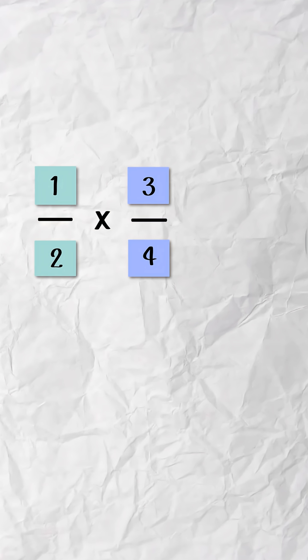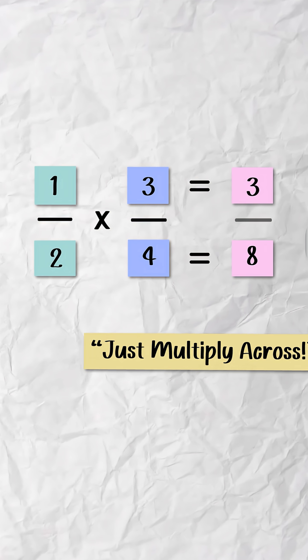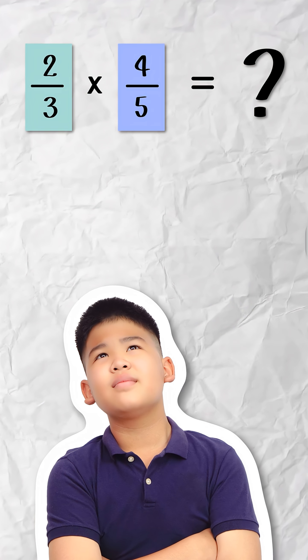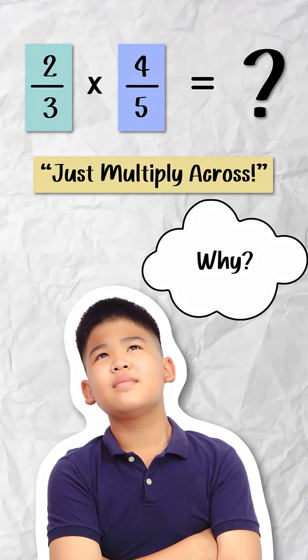Did you notice that one times three equals three, and two times four equals eight? The rule for multiplying fractions is a shortcut for this whole process. It isn't random or arbitrary. When students are told to just multiply across, they don't often know why it works.